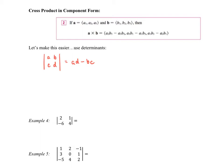You can go and memorize all of the cross product formula, but I think it's easier to utilize determinants. Let me show you a three by three quickly. For a three by three matrix with entries A, B, C in the first row, D, E, F in the second row, and G, H, I in the third row, you take A and multiply it by the two by two matrix associated with the elements not in the first row and not in the first column — that's the matrix E, F, H, I.